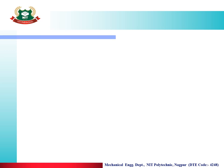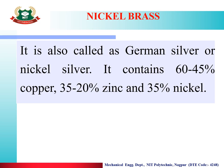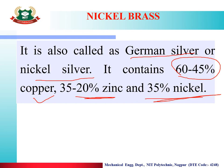The last topic for today's lecture is nickel brass. Nickel brass is also known as German silver or nickel silver. It contains 45 to 60% copper, 20 to 35% zinc, and 35% nickel. The alternative names to remember are German silver and nickel silver, and its alloying elements are copper, zinc, and nickel.